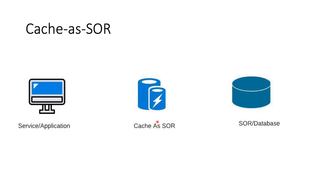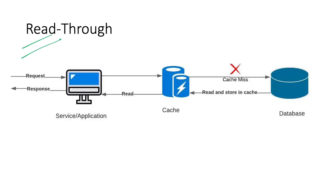Let's talk about the read-through caching strategy. Read-through is one of the simplest examples of cache as a system of record. The cache sits in between the application and the database. Whenever a read request comes to the cache, it will serve the read to the application. It is very similar to cache-aside strategy, but the key difference is: on a cache miss, it is the cache itself that goes to the database, retrieves the data, updates its entry, and then the application reads from the cache.